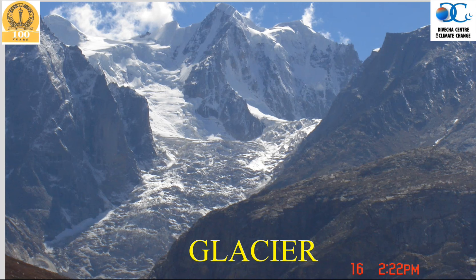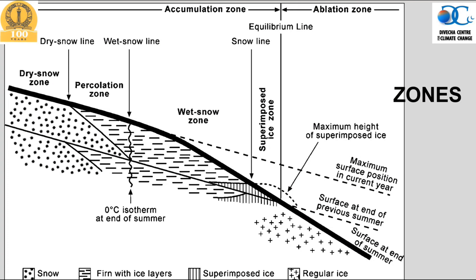A glacier is a moving system. To really understand glaciers, some fundamental understanding is very important — that means how glaciers work and their different zones and regions. Glaciers have fundamentally two major zones: one is the accumulation zone and the other is the ablation zone.